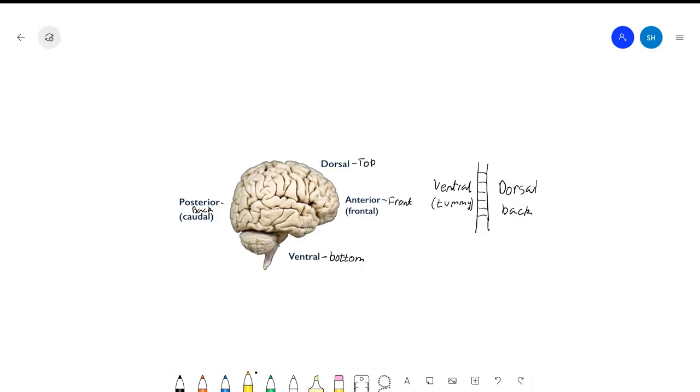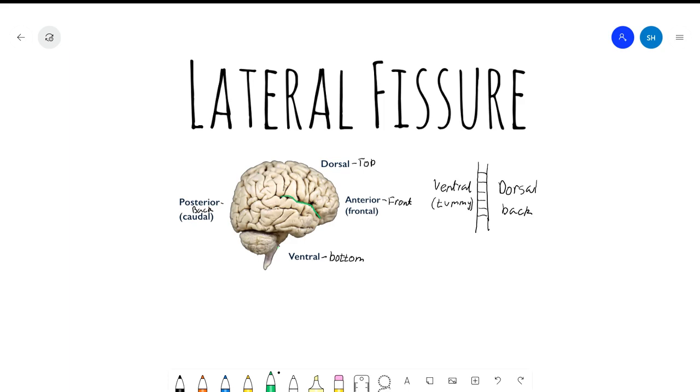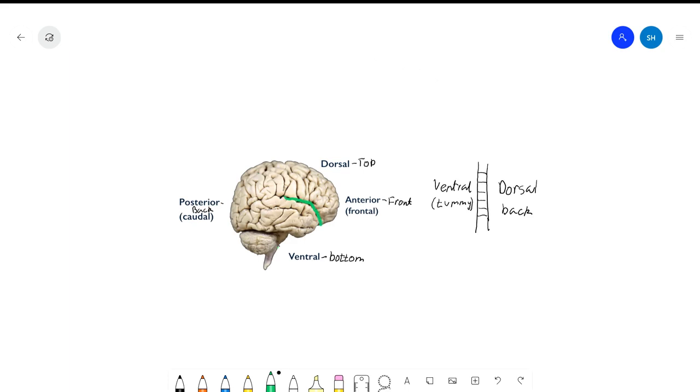Now let's go on to the landmarks. The first landmark that I want to talk about is the lateral fissure. The lateral fissure is supposed to divide the frontal and the temporal lobe. So the frontal lobe is right here and the temporal lobe is right here.